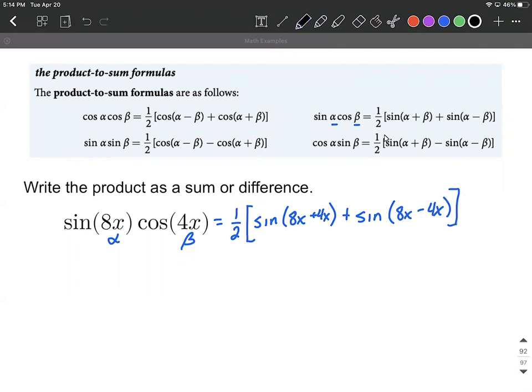Now all we have to do is reduce this down. I'm going to bring the one half along for the time being. We can combine these like terms: 8x plus 4 more makes 12x, plus bring along the sine, 8x minus 4x leaves us with 4x.